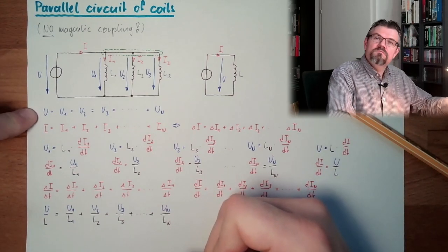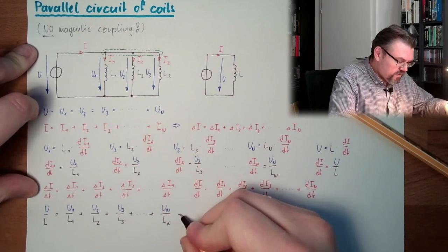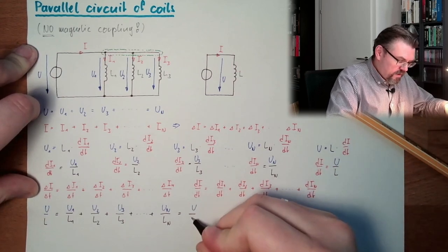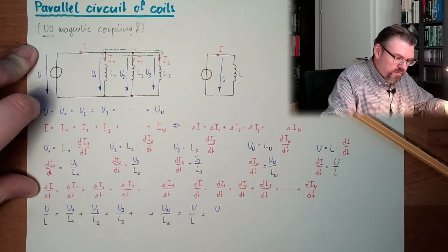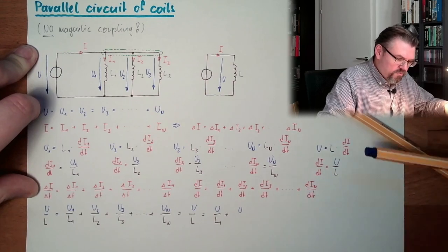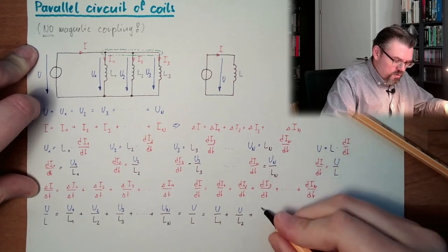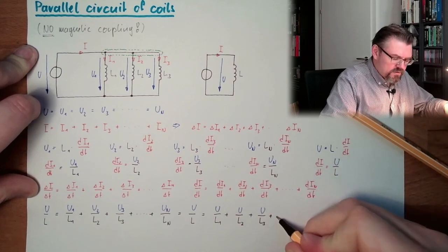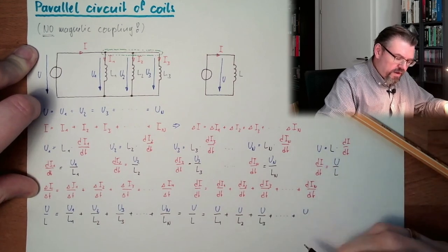And now, I take this part, that all U's are the same. So, this actually equals U divided by L1 plus U divided by L2 plus U divided by L3 plus, and so on, plus U divided by LN.